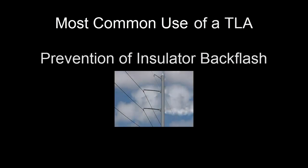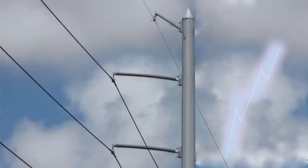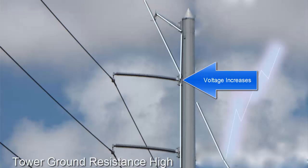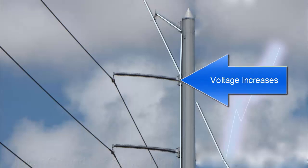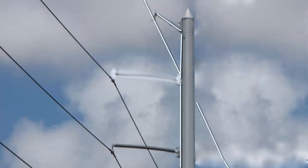The most common use of the TLA is the prevention of insulator backflash on shielded transmission lines. In this graphic you see how the backflash is created during a strike. When the overhead ground wire intercepts a lightning stroke, it conducts the current to ground via its downground. If the tower ground resistance is too high, the voltage at the base of the phase insulator will increase.